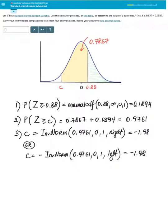Here is one more similar example. Let Z be a standard normal random variable. Use the calculator provided or this table to determine the value of C such that probability of C which is less than or equal to Z which is less than or equal to 0.88 equals to 0.7867. I would like to get a diagram first.